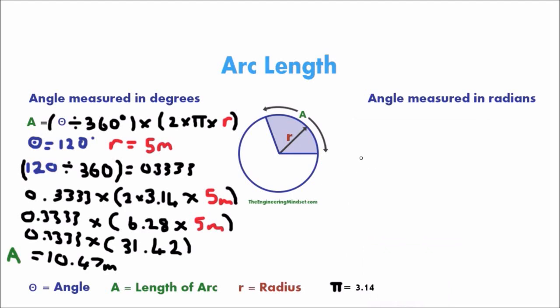And the second method to do this is really simple. That's if you know this distance here and it's measured in radians. So for that, we would want to use the formula A is equal to theta times radius.